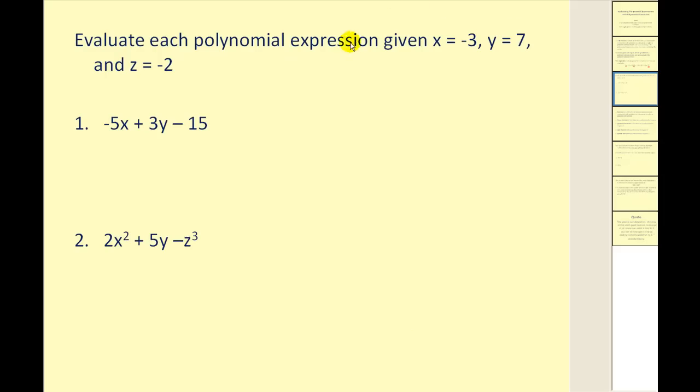Let's try a couple of our own. We want to evaluate these expressions given x = -3, y = 7, and z = -2. We would have -5 times -3 plus 3 times 7 minus 15. Now we simplify this expression to get 15 plus 21 minus 15, which is equal to 21.